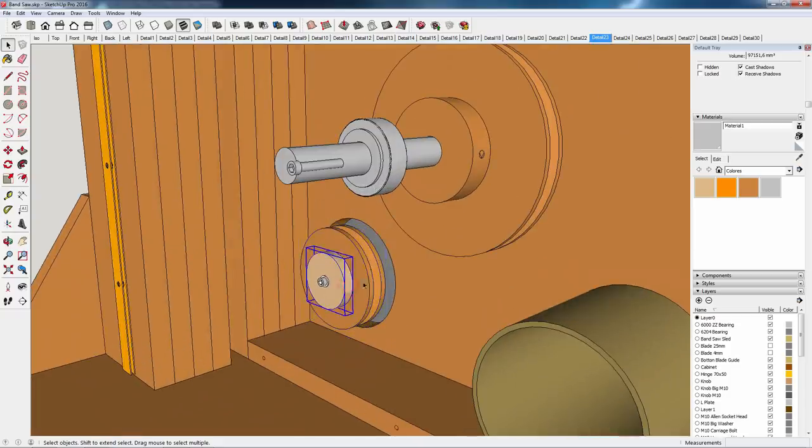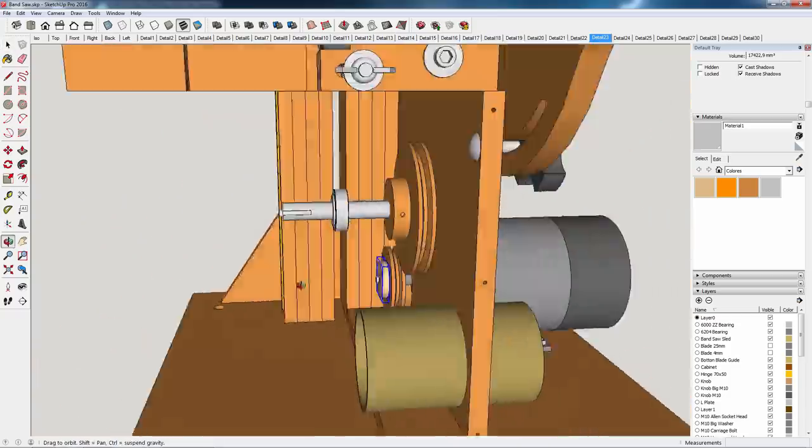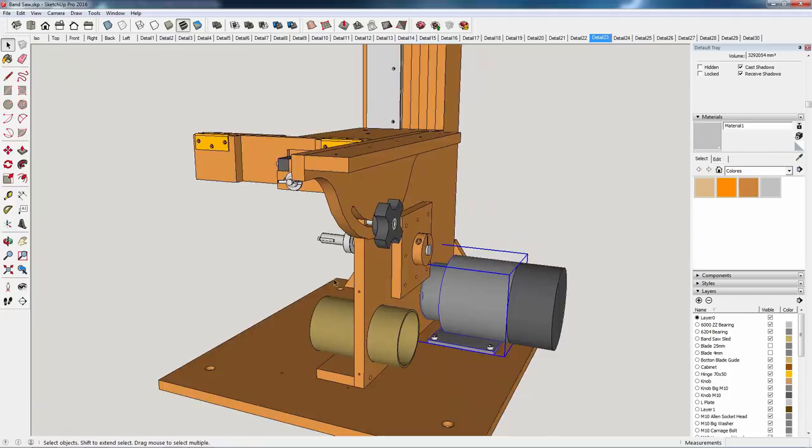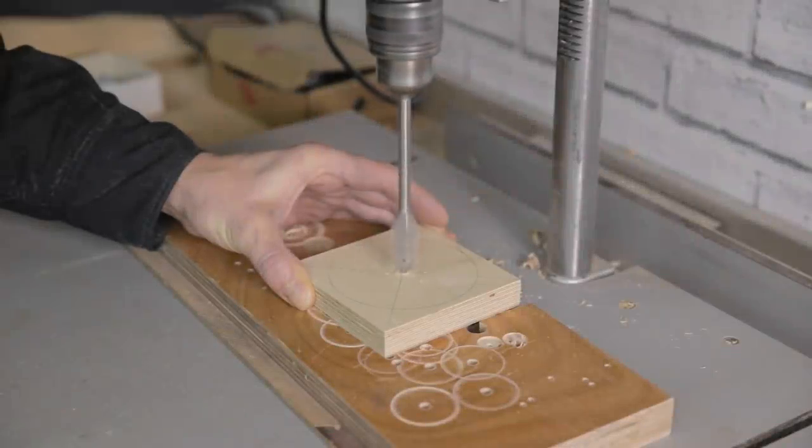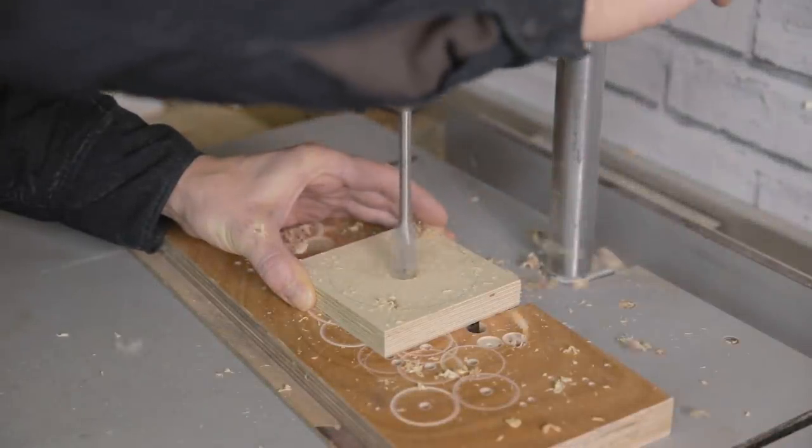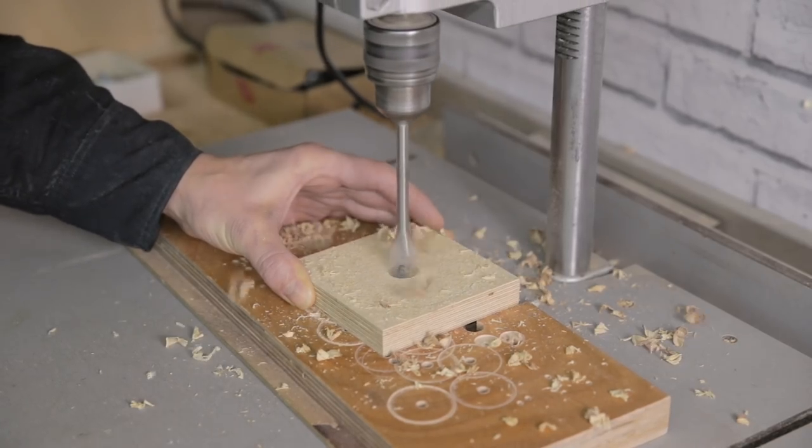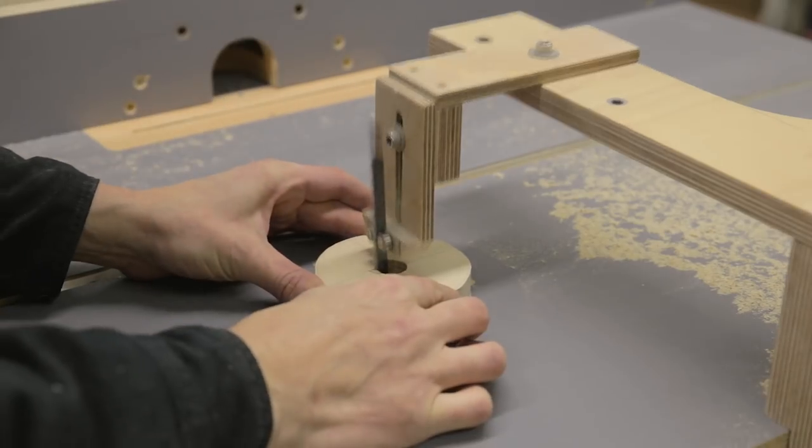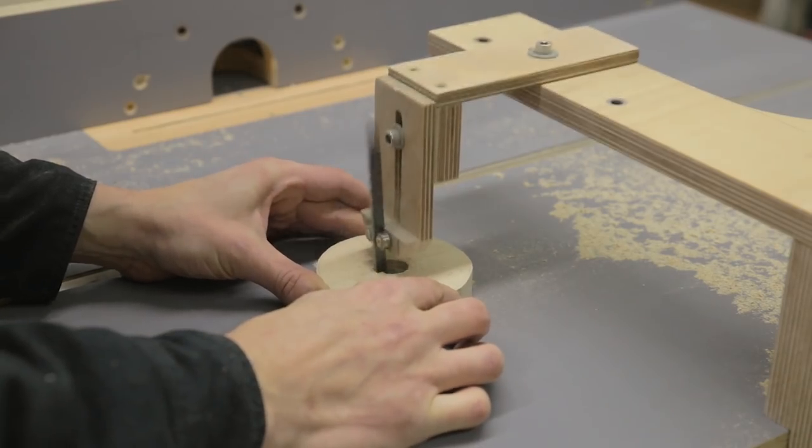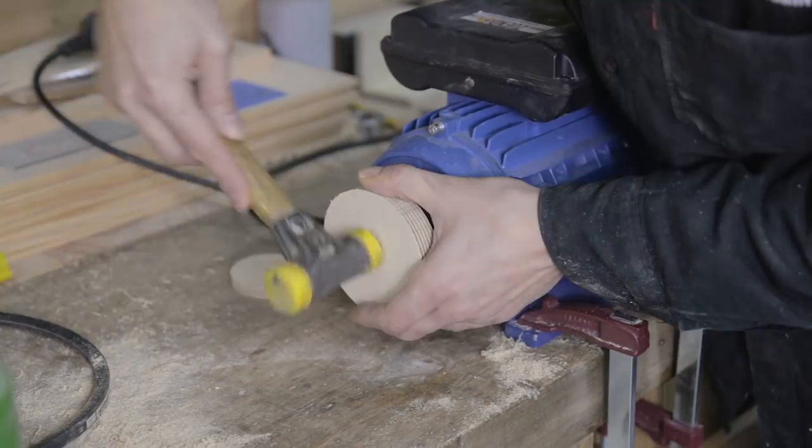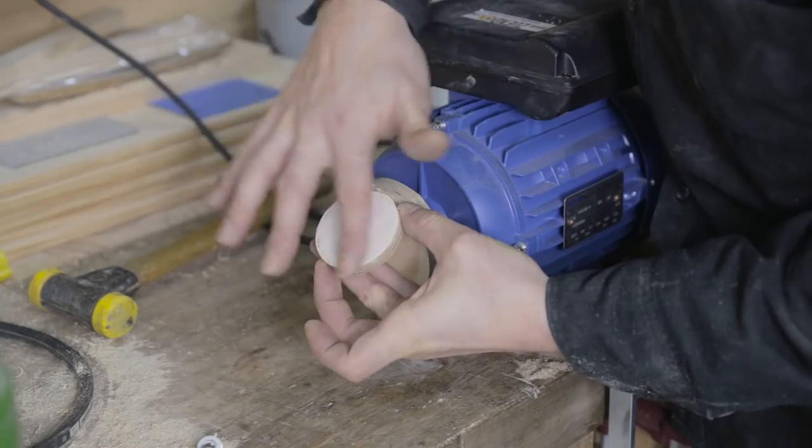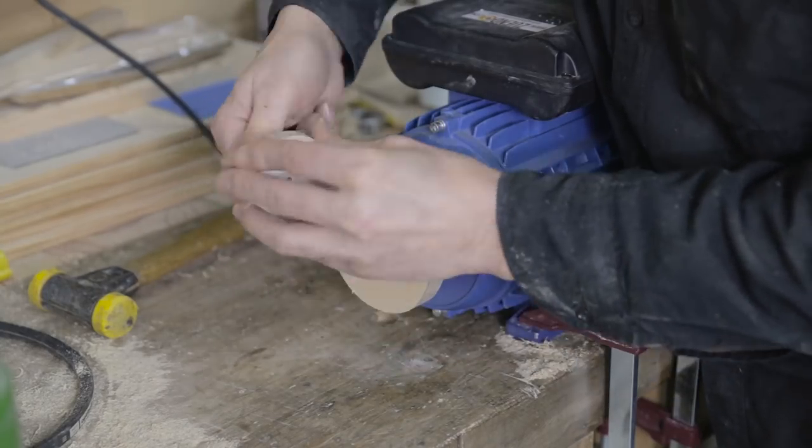Now we have to machine the motor pulley. I repeat the same steps as before. I insert the pulley being careful not to damage the motor, and I glue the pulley's cover while tightening the motor shaft screw.